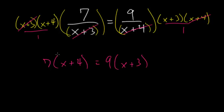From here I just need to distribute the 9 and the 7. So I have 7x plus 28, and this is equal to 9x plus 27.